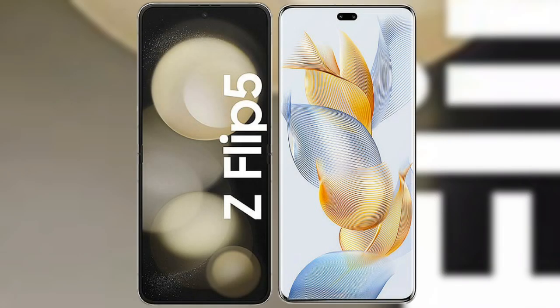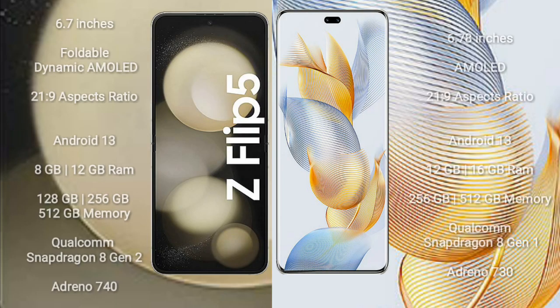I will compare the new Samsung Galaxy Z Flip 5 with Honor 90 Pro. Samsung Galaxy Z Flip 5 comes with a 6.7-inch foldable dynamic AMOLED display with an aspect ratio of 21.9. Honor 90 Pro comes with a 6.78-inch AMOLED display with an aspect ratio of 21.9.